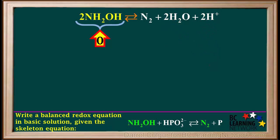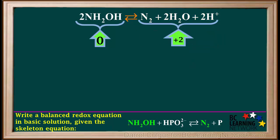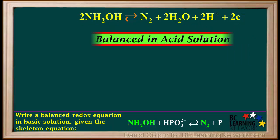Now we balance charge. The total charge on the left side is 0. The total charge on the right side is 0 plus 0 plus positive 2, which is equal to positive 2. So to balance charge, we add two electrons to the right side. This half-reaction is now balanced in acid solution. We don't change it to basic here — we'll wait and change the overall redox equation to basic at the end.